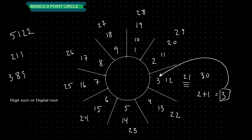Same thing with this number here — 24. If I add 2 plus 4, that takes me to 6. You can see that when I add them, it takes me right back to the root. This is why we call it the digital sum, digit sum — sum means addition. So if I want to find what spoke this number 211 lands on, all I do is simply add the numbers together.